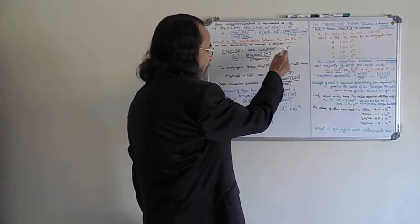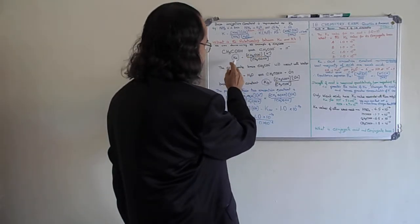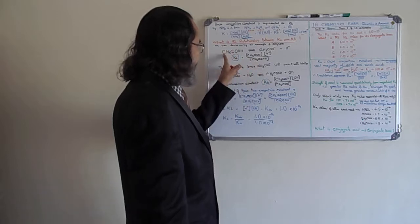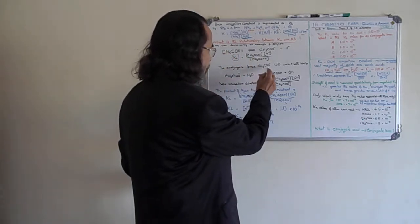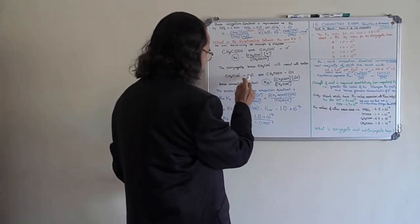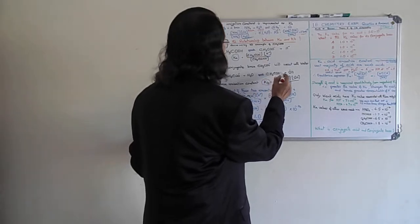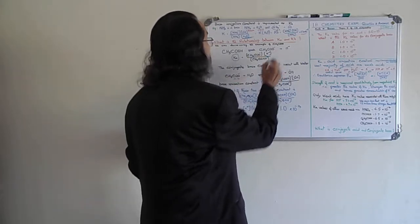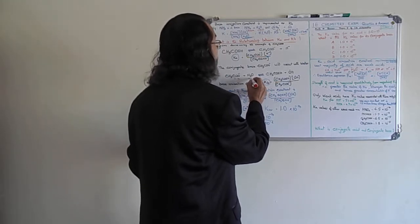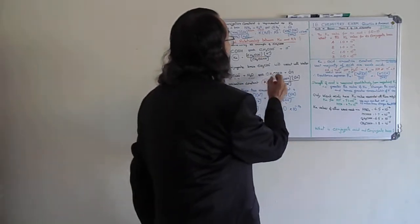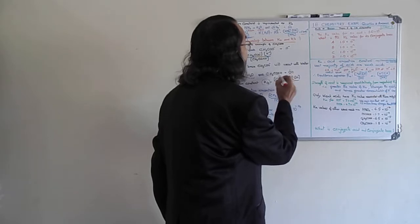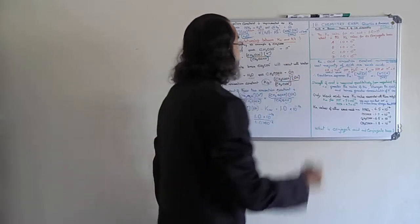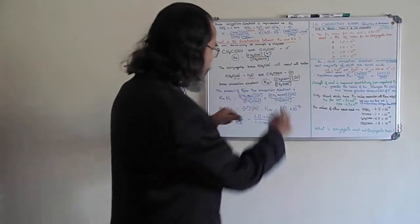Acetic acid (CH₃COOH) ionizes to give CH₃COO⁻ plus H⁺. Therefore Ka equals the product-side concentrations divided by the reactant concentration. The conjugate base CH₃COO⁻ reacts with water. In this reaction water acts as an acid and CH₃COOH is reformed — the conjugate base from the first equation is now acting as a base, and water acting as an acid produces OH⁻ as the conjugate base.